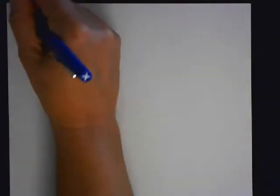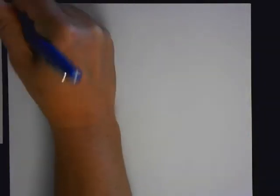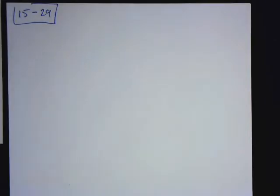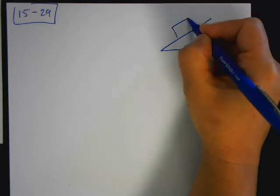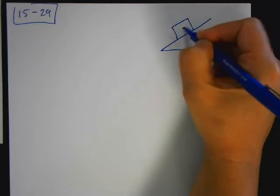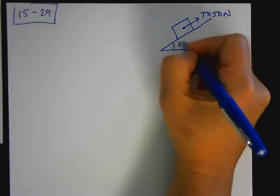Now we're going to do problem 15-29. So this one is one that is on an incline. So first you're going to draw your picture. So here is my block and I'm pulling it up with a force of 50 newtons. Okay, and this angle here is 37 degrees.